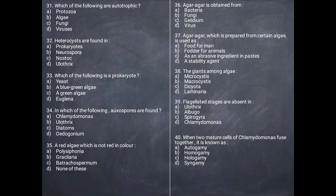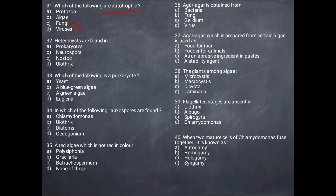Next question: Which of the following are autotrophic? Protozoa is not autotrophic. Viruses are not autotrophic. Fungi are not autotrophic. Algae are autotrophic. The correct answer is B, algae.